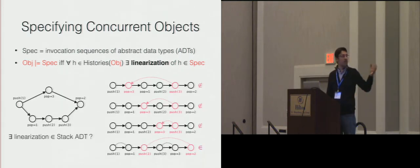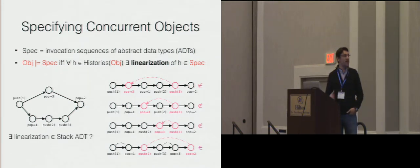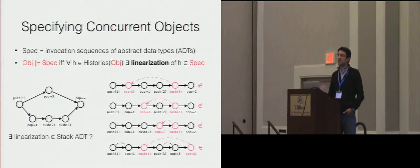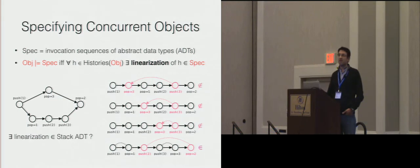To give an example: if we consider the history on the left, this one is valid because if we enumerate all its linearizations, we can find, for instance, the last one, which is admitted by the abstract data type of a stack, since the values are removed in the correct order.